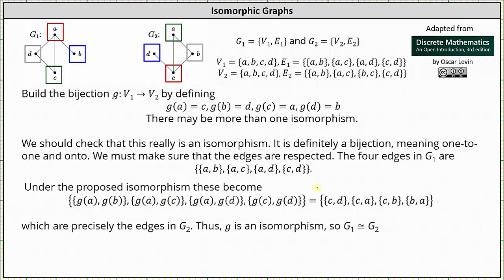And now comparing the edge set under the proposed isomorphism to the edge set of G2 or the set E2, notice both contain the edge CD, both contain the edge CA or AC. Remember the order doesn't matter.